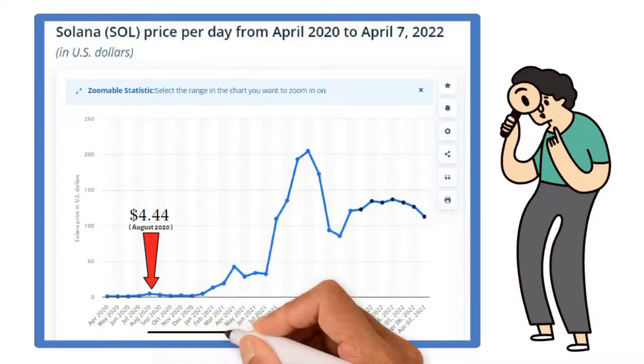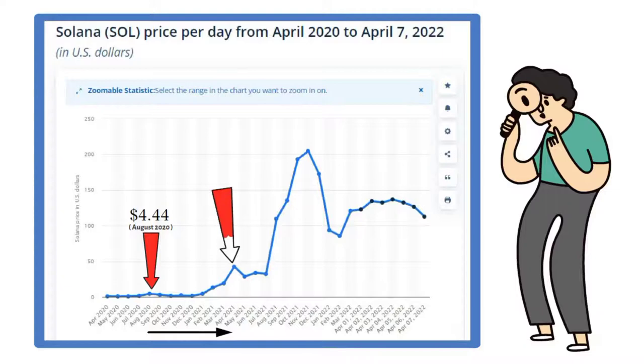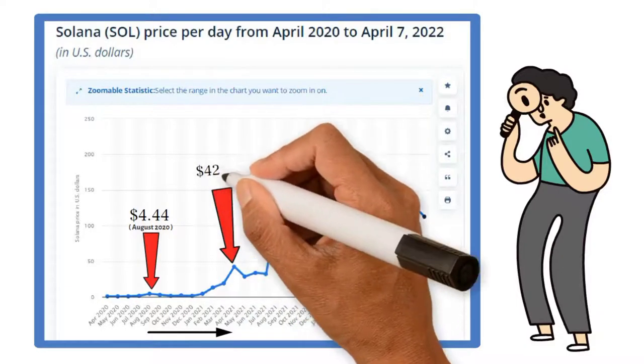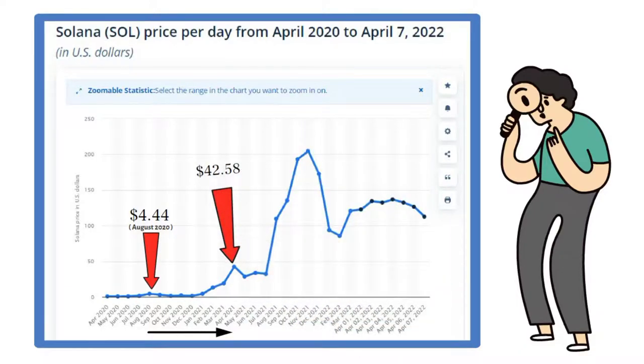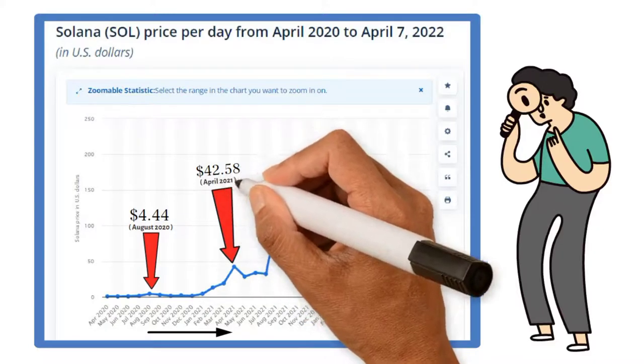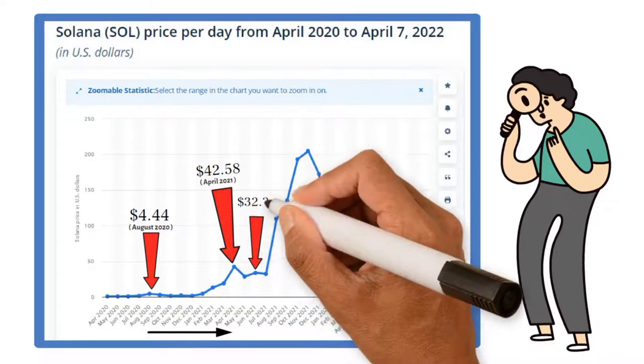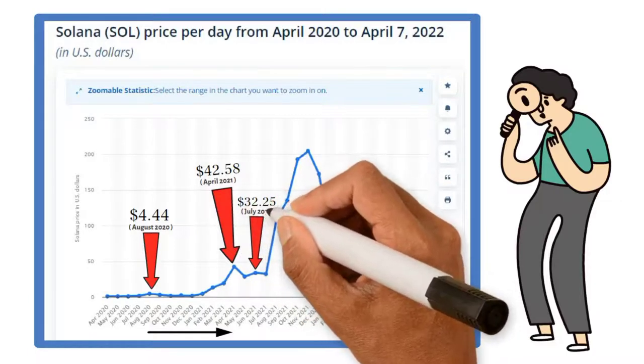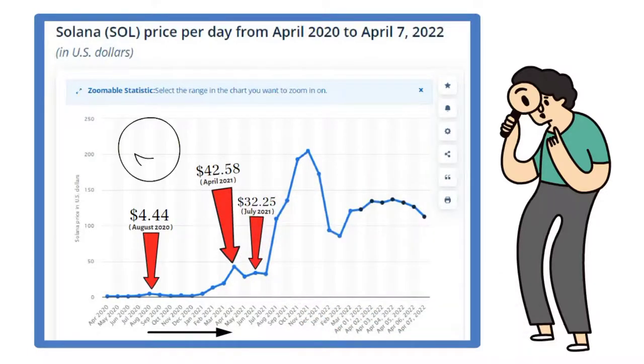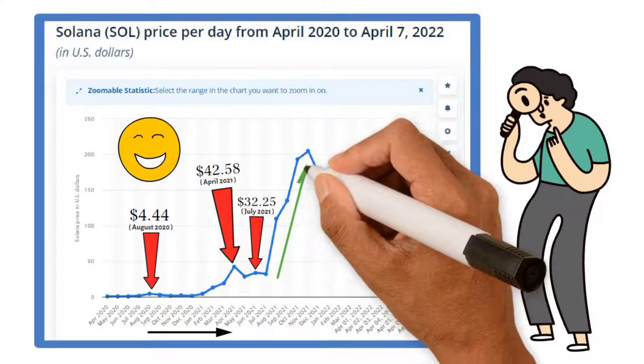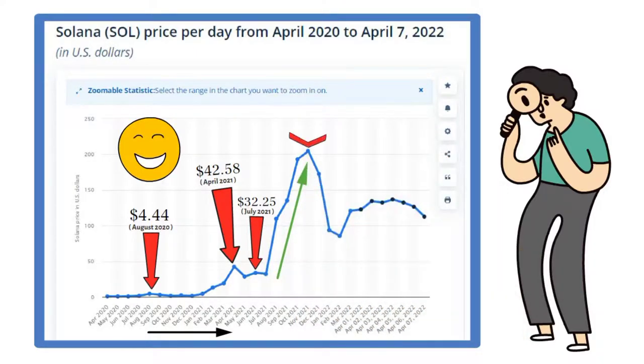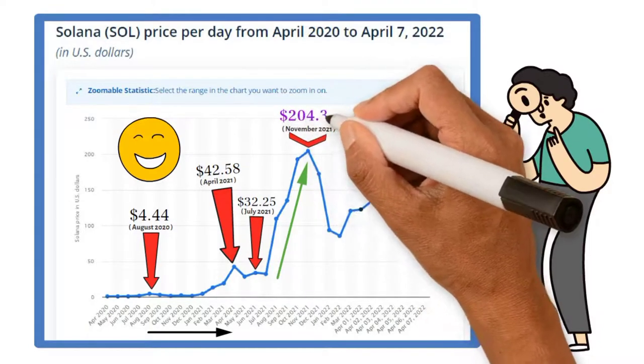Then, after a steady increase for a few months, it hit its peak price which was $42.58 US dollars back in April 2021. The price dropped to $32.25 US dollars in July 2021. Shortly right after that, Sol made all the investors very happy. It increased exponentially till November 2021 and hit its record high value of $204.35 US dollars.